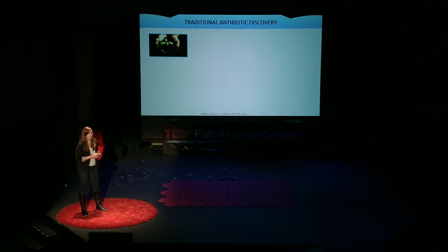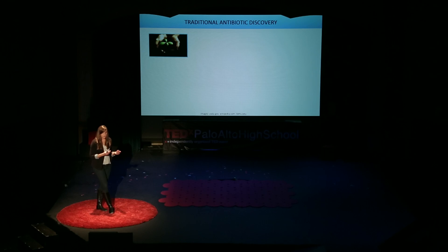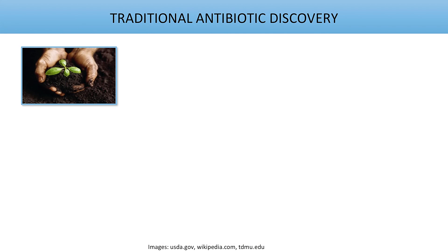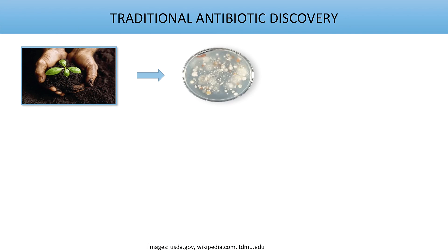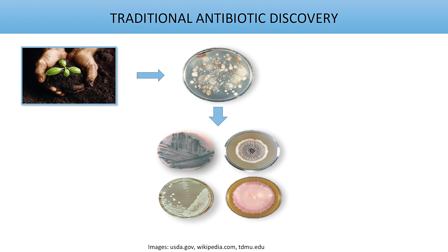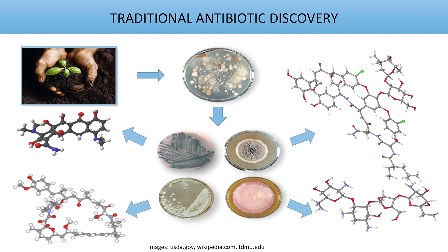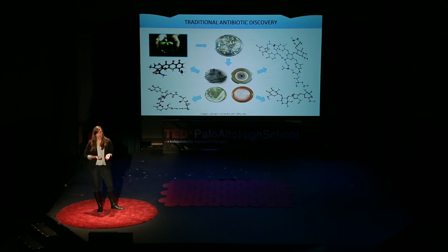In traditional antibiotic discovery, scientists go out and collect a soil sample, and these actinomycete bacteria are very prevalent in soil samples. We bring the soil samples back to the lab and plate them out on media that helps the bacteria to grow. You might see something like this, where you have lots of different types of bacteria growing on this plate. We can then take each type of bacteria and grow it individually, and then take these cultures and extract them — and what they produce are lots of different types of antibiotic molecules.